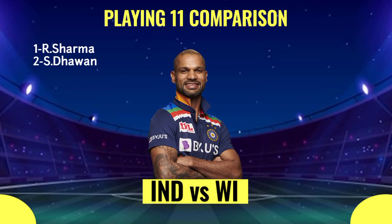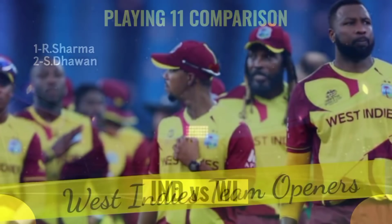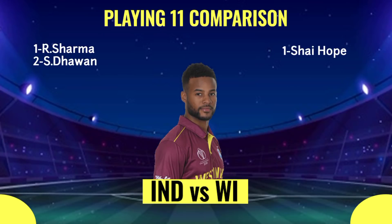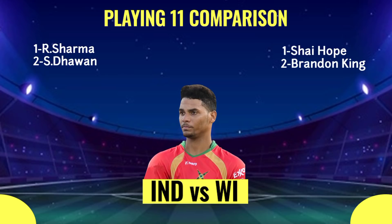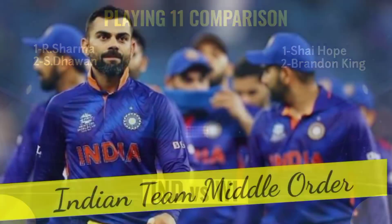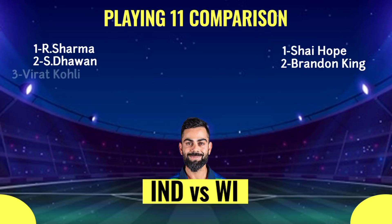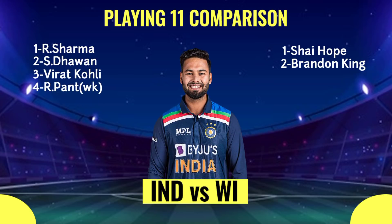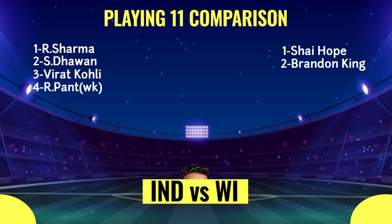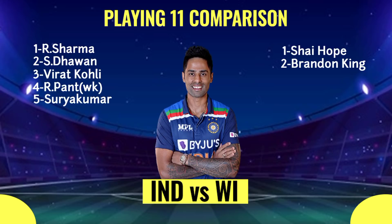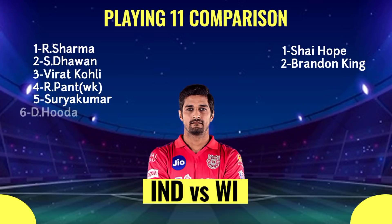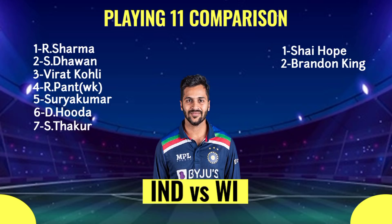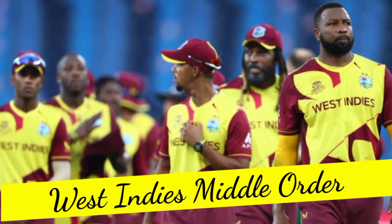Team India openers: Number 1 Rohit Sharma, Captain and Right-Hand Batsman. Number 2 Shikhar Dhawan, Left-Hand Batsman. West Indies openers: Number 1 Shai Hope, Right-Hand Batsman. Number 2 Brandon King, Right-Hand Batsman. Indian Team Middle Order: Number 3 Virat Kohli, Right-Hand Batsman. Number 4 Rishabh Pant, Left-Hand Batsman. Number 5 Surikumar Yadav, Right-Hand Batsman. Number 6 Deepak Hudda, All-Rounder. Number 7 Shardul Thakur, All-Rounder.